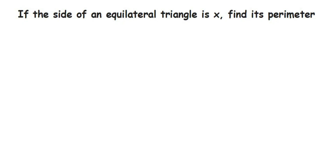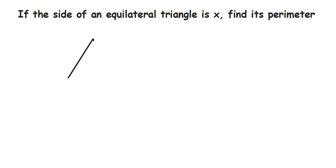Hey everyone, there is a question on equilateral triangle — this is a really simple question but can come for one mark. The question is: if the side of the equilateral triangle is x, find its perimeter. Equilateral triangle means a triangle where all the sides are equal.